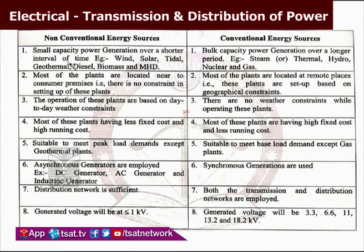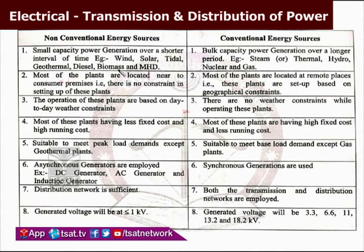But in non-conventional methods, only a small capacity of power generation is possible over a shorter interval of time. For example, wind, solar, tidal, geothermal, diesel, and biomass or biowaste. Using these methods, we can generate very less amount of power over a very short duration. By using conventional methods, we can generate bulk power over a longer term.